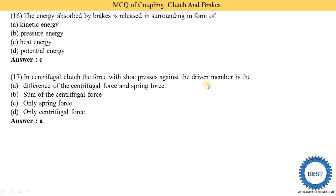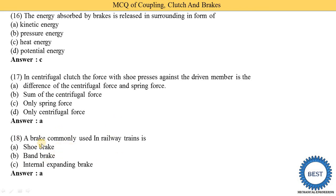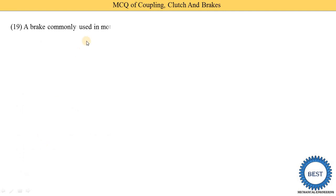A brake commonly used in railway trains — options: shoe brake, band brake, and internal expansion brake. The correct answer is shoe brake. These shoe brakes are operated using a pneumatic system, so in railway trains the shoe brake is used.